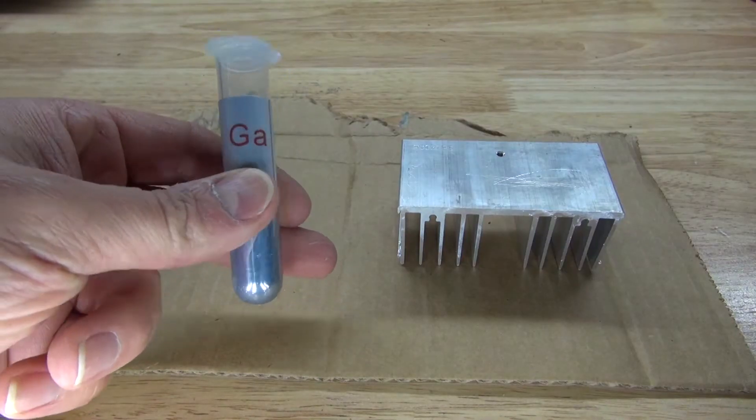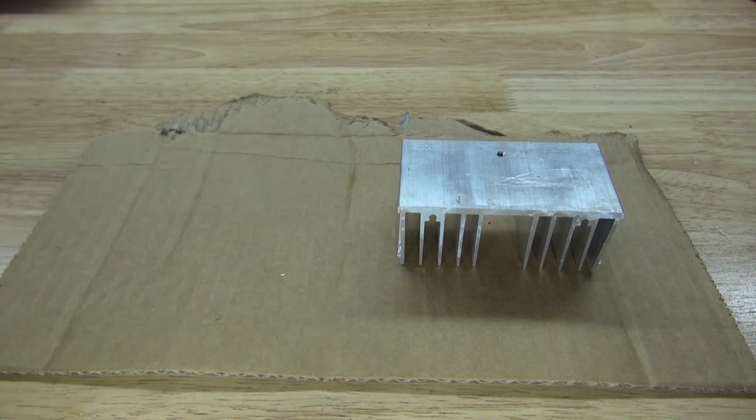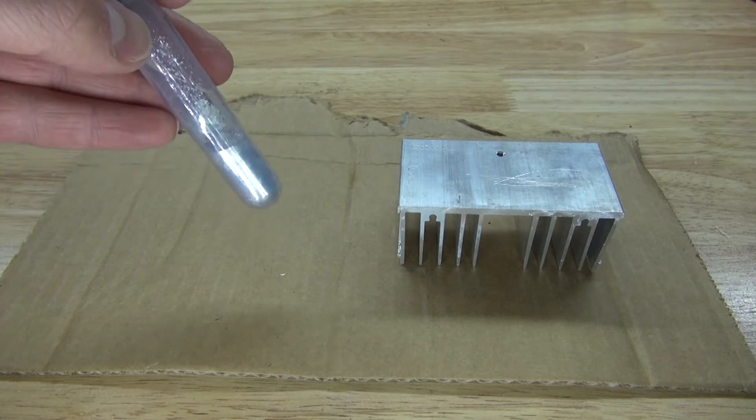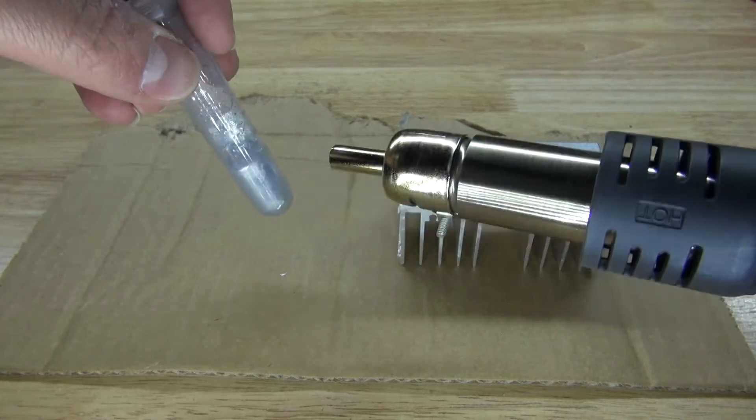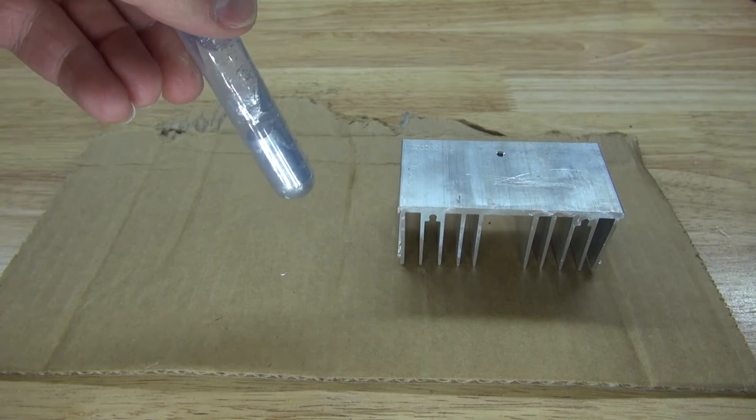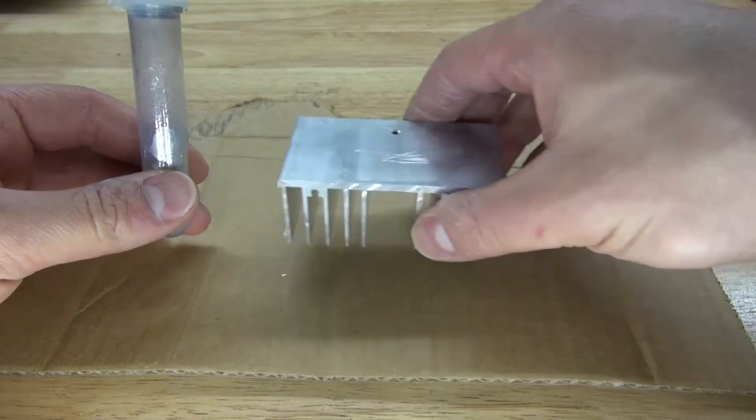And now it's time to use some gallium to destroy this heatsink. I have right here some liquid gallium that I've already melted, and I used my hot air gun to melt it. It didn't take very long since gallium melts at 30 degrees Celsius or 98 degrees Fahrenheit.